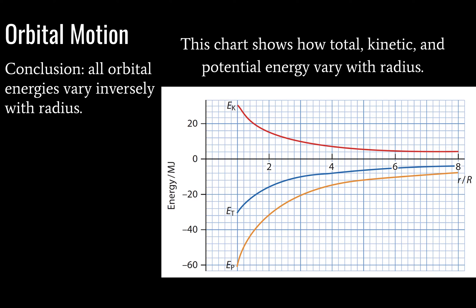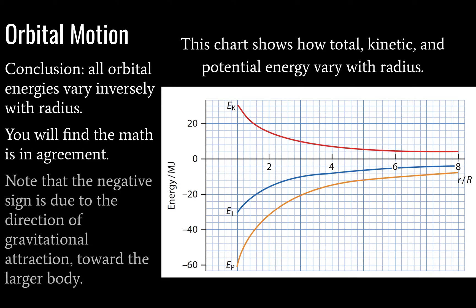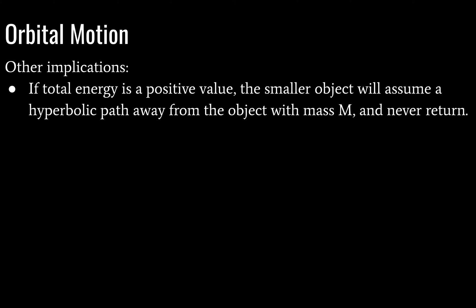All energies vary inversely with radius — if you plug one divided by x into your calculator, you get a curve that looks just like these curves. The negative signs on our energies are due to the direction of gravitational attraction, telling us it's directed toward the larger body. There are a few further implications to discuss, and you should write these down and memorize them.